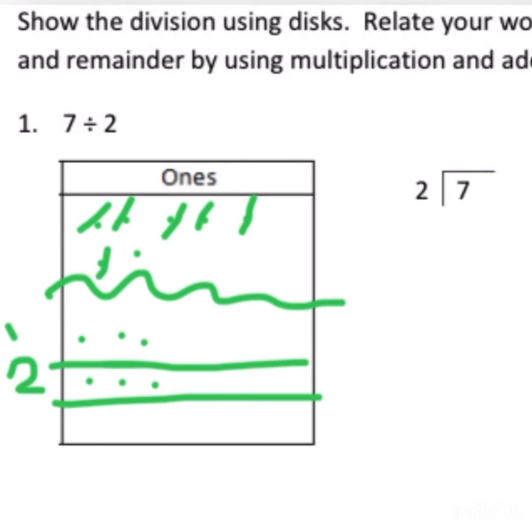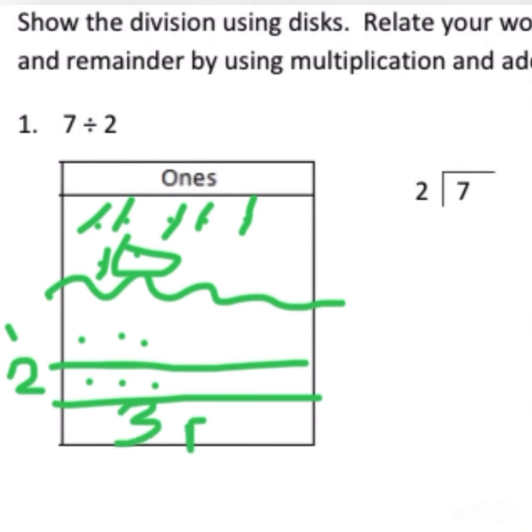We need an even amount of disks on each line. So we're going to count how many disks we have on each line right now and I see that we have three dots on each line and we have one disk left over. This gives us our answer which is three remainder one.